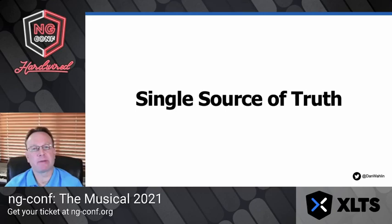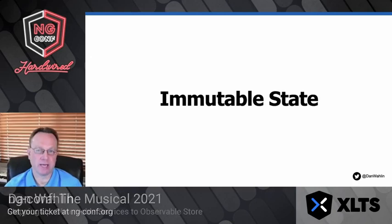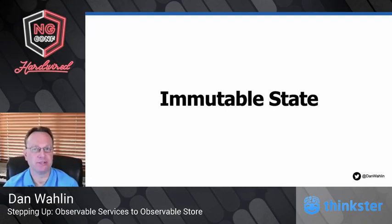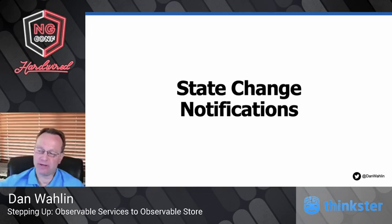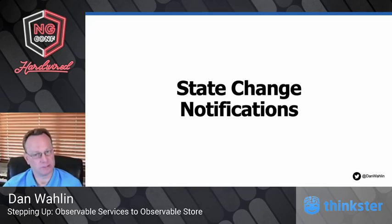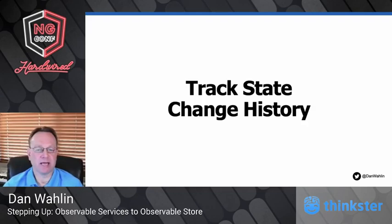If we're going to have a store that multiple services and other parts of the app can interact with, we definitely need a single source of truth. We need immutable state — that's important because otherwise change detection like ngOnChanges won't fire unless the reference changes. We need notifications, because if you change the store but a component never interacted with it, we still need to know when it changes. And from a debugging standpoint, it'd be nice to track change history.